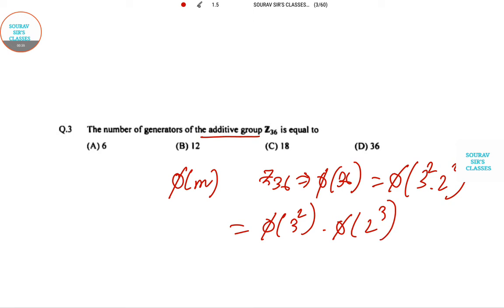Sorry, phi of 2 square as well. So this will be phi of 3 squared times phi of 2 squared. This is 6 and this is 2, so the answer is 12. Hence the number of generators is 12.